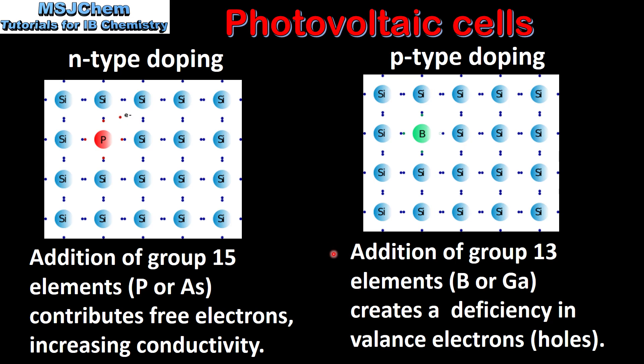In P-type doping, the addition of group 13 elements, such as boron or gallium, creates a deficiency in valence electrons. This deficiency in valence electrons produces holes in the lattice structure.